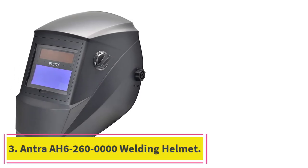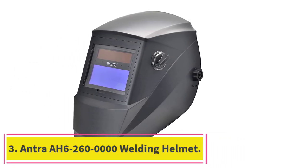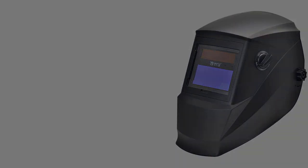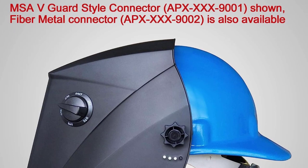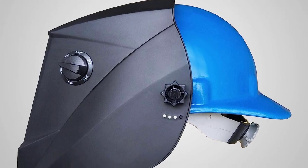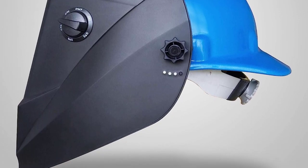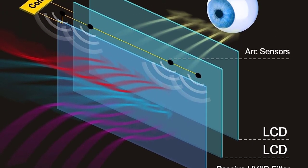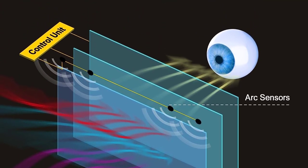At number 3, Antra AH6-260-0000 Welding Helmet. Here is the all-time top-tier inexpensive auto-darkening welding helmet, exclusively manufactured to meet the requirements of professional welders. The low cost of this helmet is a major perk, but besides that, its quality and features are likewise unprecedented.